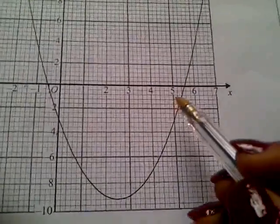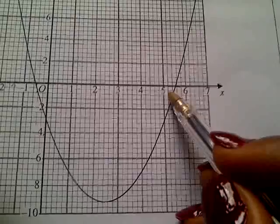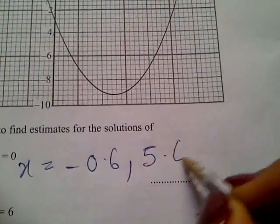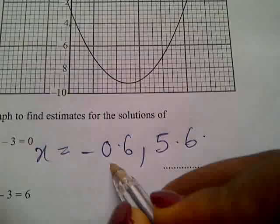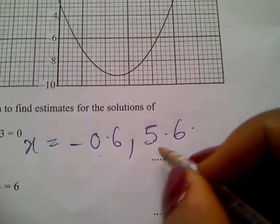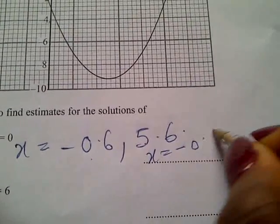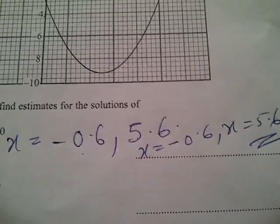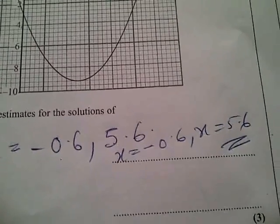So you have x equal to negative 0.6 and x equal to 5.6. So that's it for 14 ai.